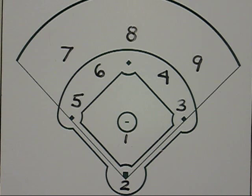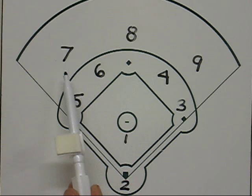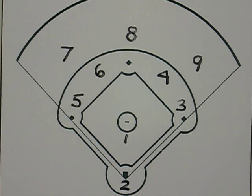You can see that we have a diagram of our field here and I've given each player on the field a number. These are standard numbers throughout baseball. Our pitcher is number one, our catcher is number two, our first baseman is number three, our second baseman is number four. You have to go across the diamond to your third baseman — number five. Your shortstop is number six. Going to the outfield, you always start with left field: left field is number seven, center field eight, right field is nine.